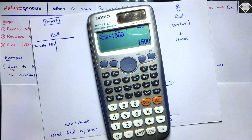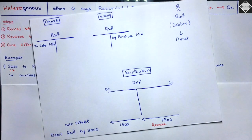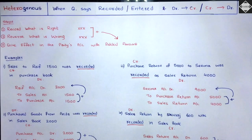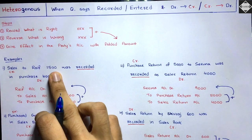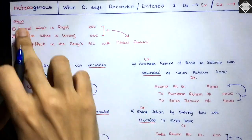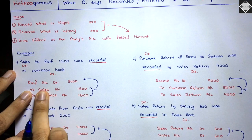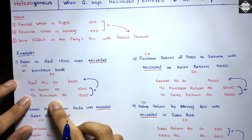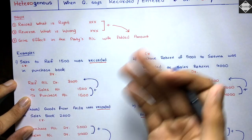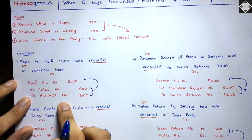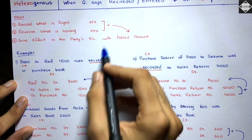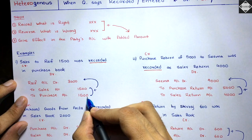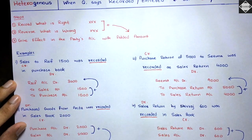Always say 'added amount' — never 'double' — because amounts may differ in some questions. For the Rife example: record right (to sales ₹1500), reverse wrong (to purchase ₹1500), give effect in party's account with added amount (₹1500 + ₹1500 = ₹3000, Rife account debit ₹3000). That completes the rectification entry.